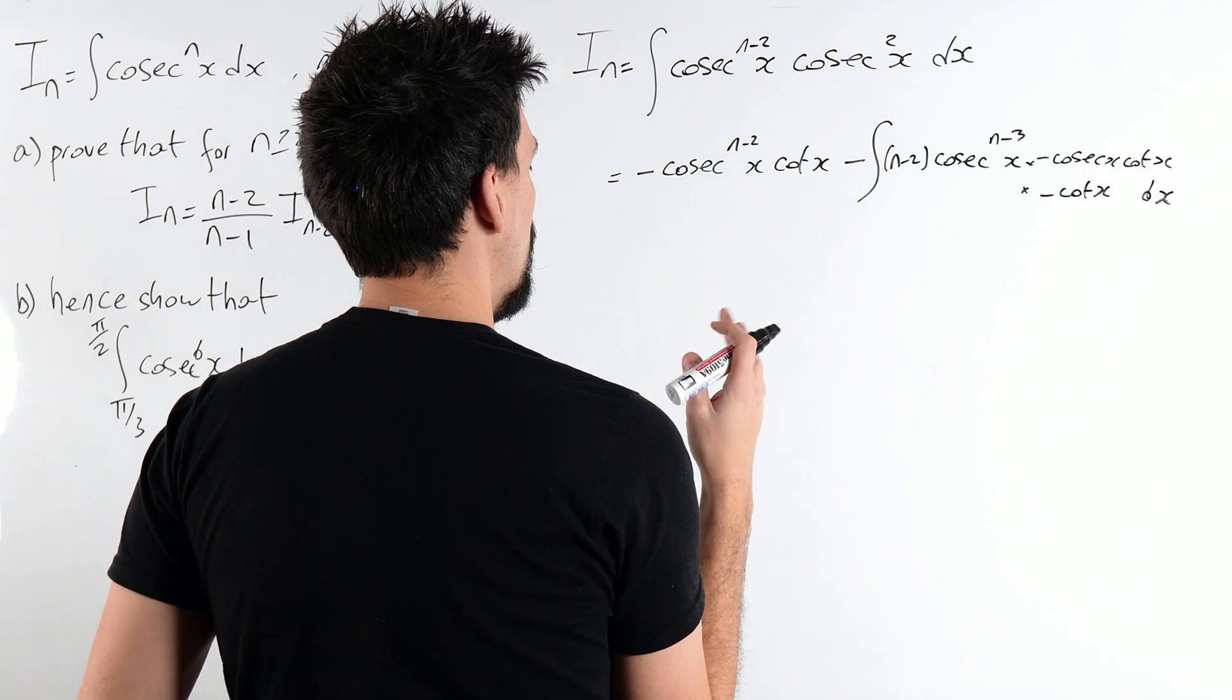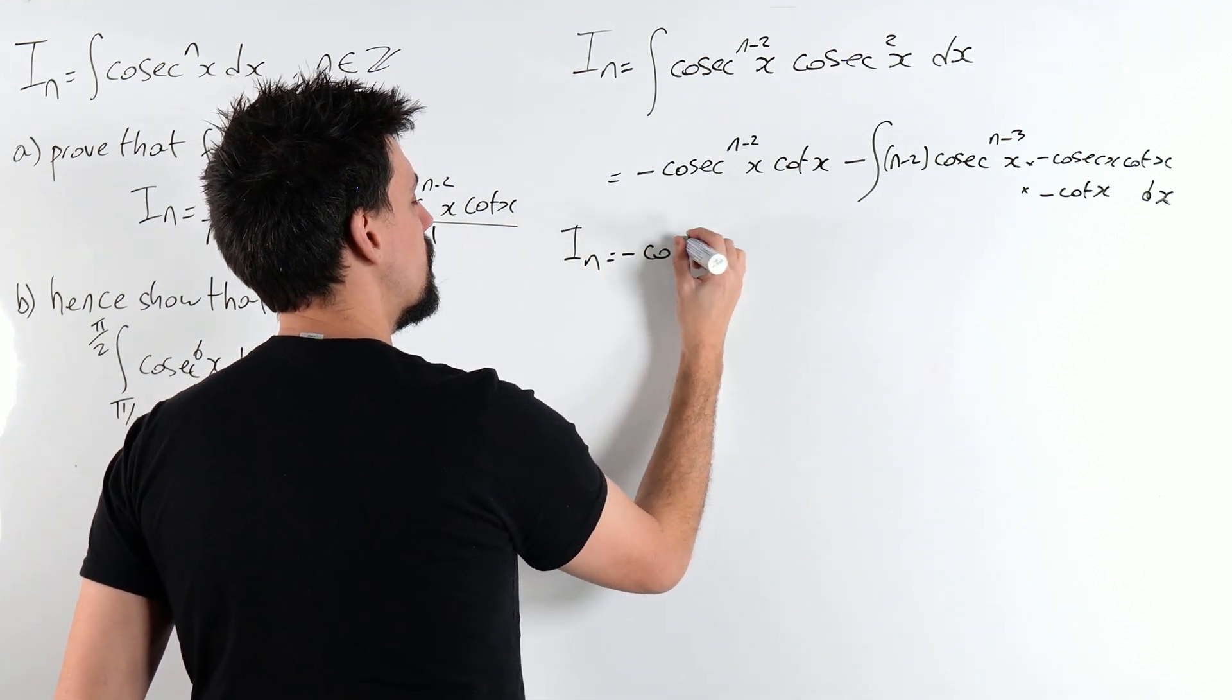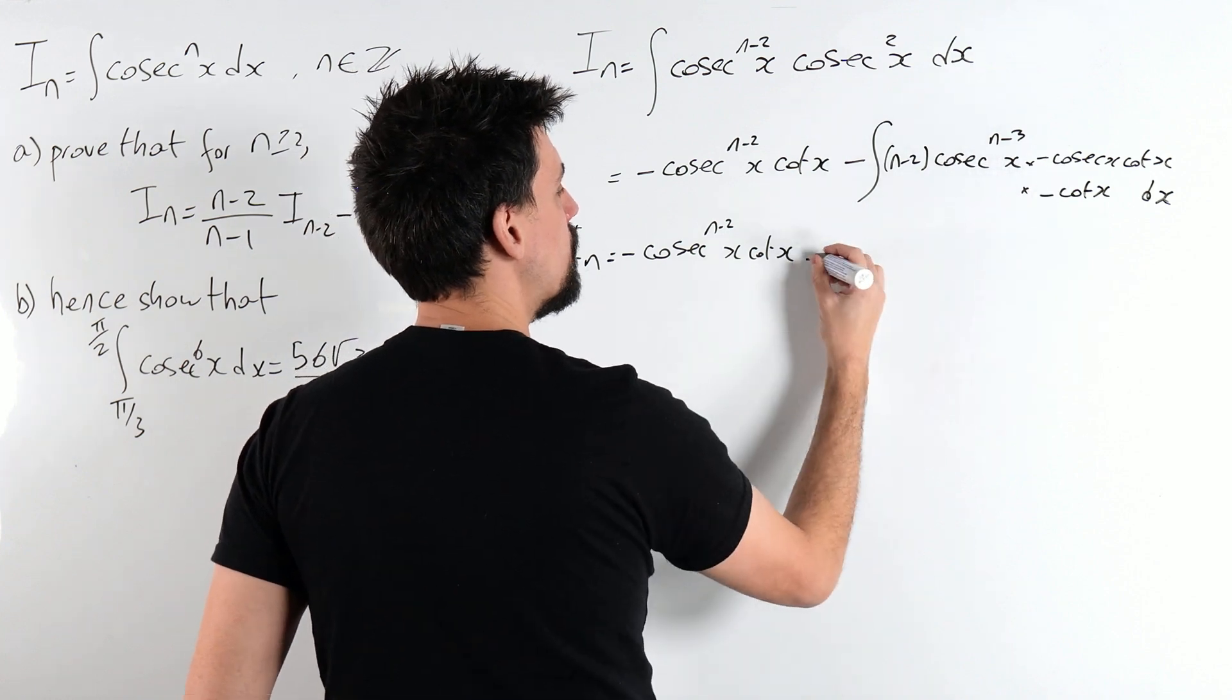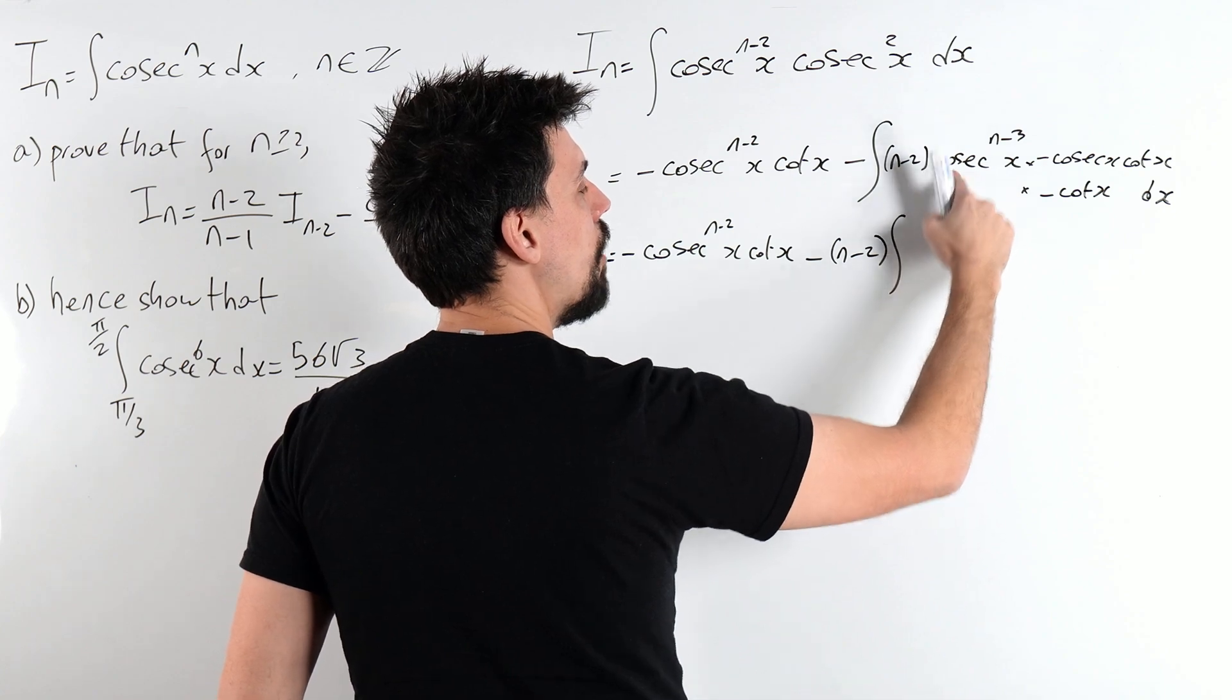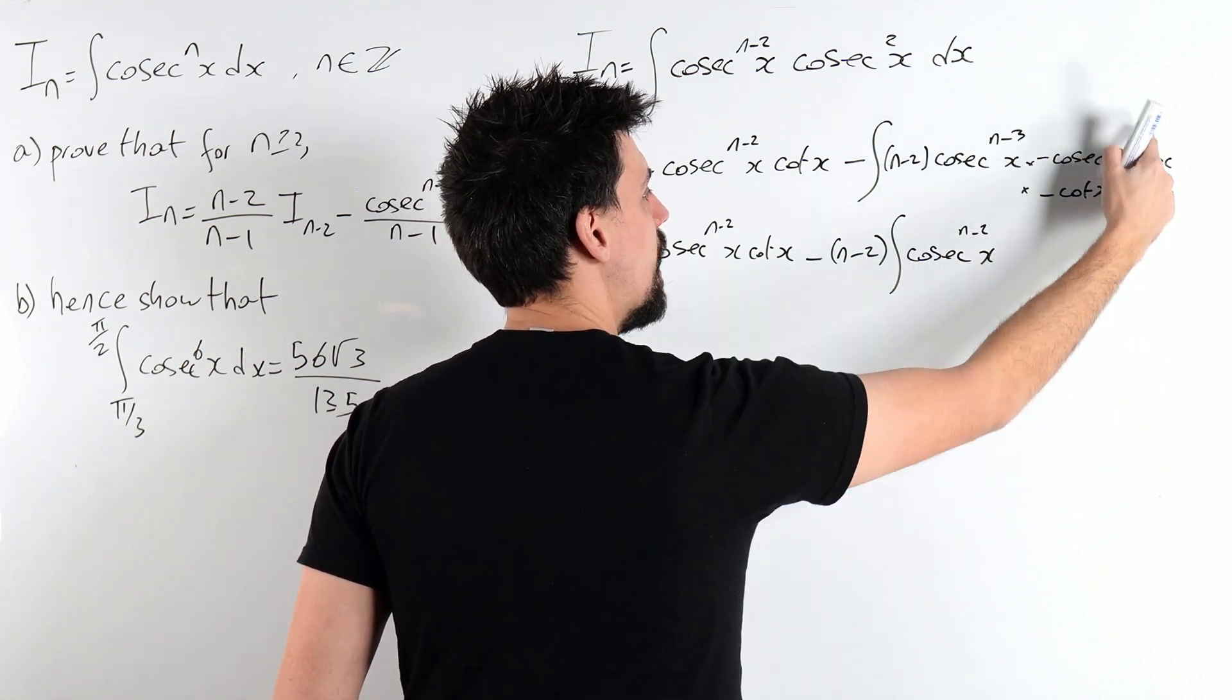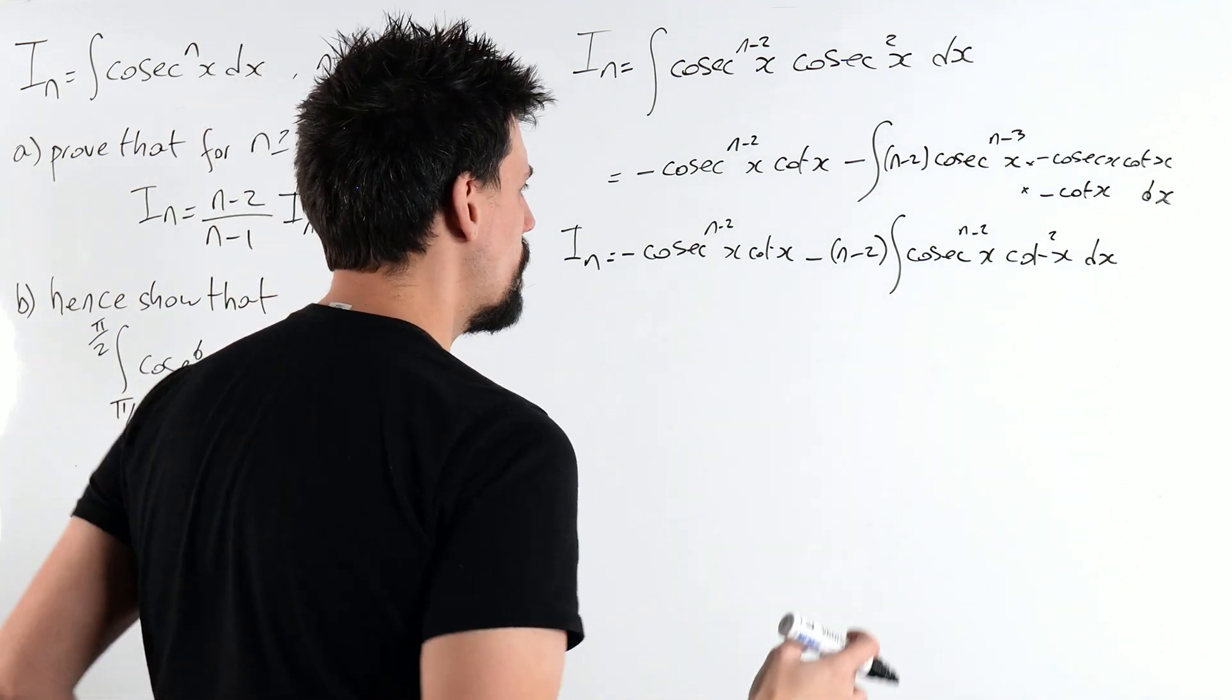Alright, so what have we actually got here? We've got that i_n is minus cosec to the n-2 x cot x, minus, minus, minus, we've still got a minus. Let's crack on with that n-2, cosec to the n-3 cosec, which is cosec to the n-2 of x. And then I do get a cot squared of x dx.